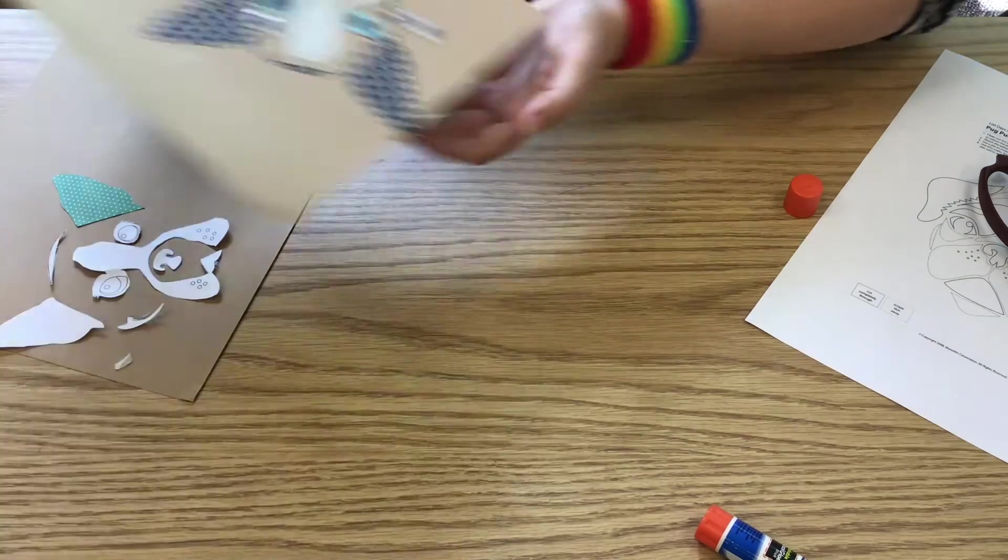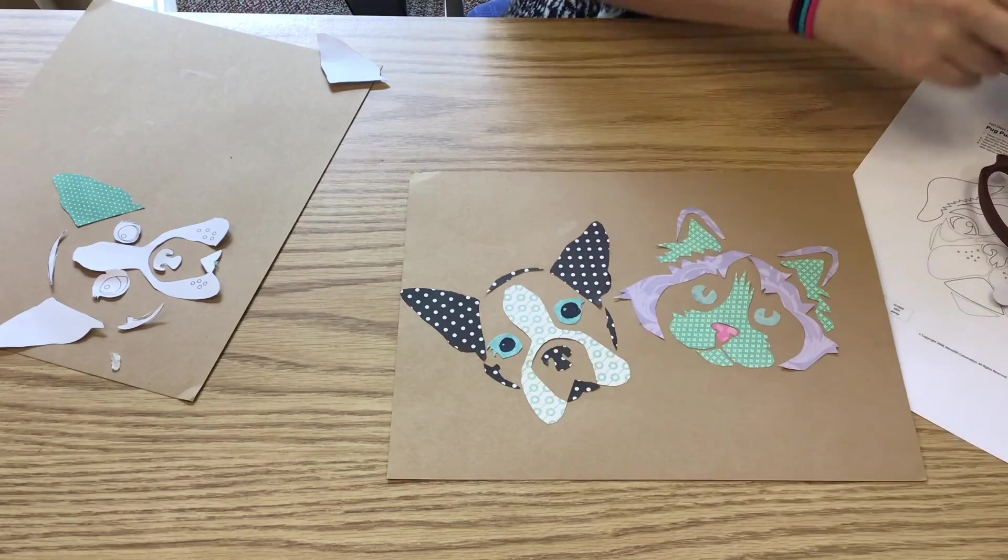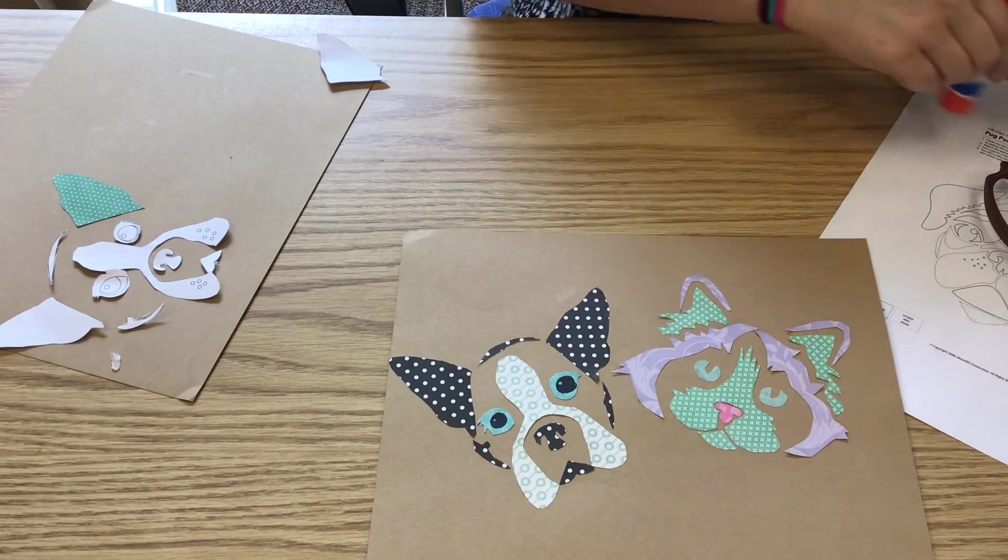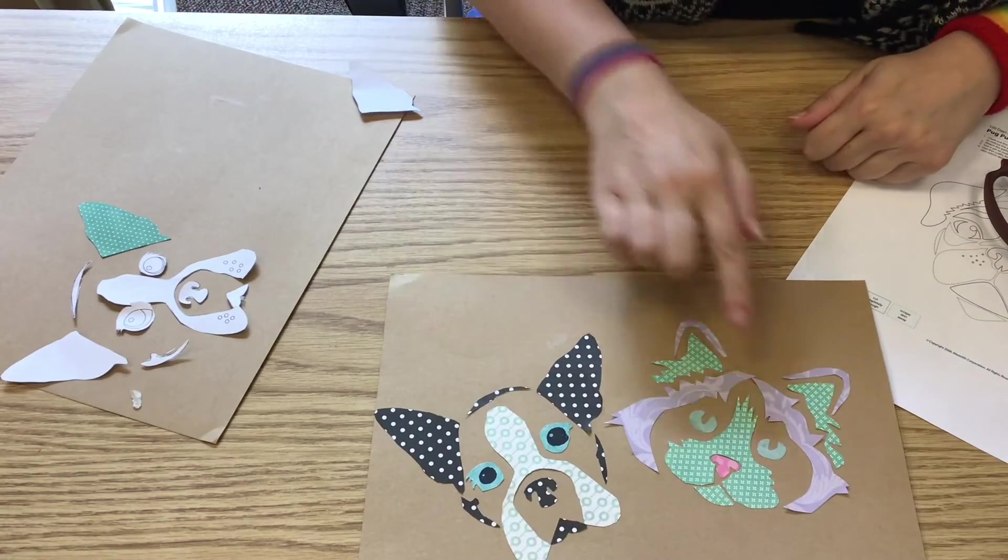Until you have whatever two faces you want. I did one dog and one cat. There you have it. You can leave the eyes just as the paper if you like the paper. If you want to draw eyes on, you can do that.